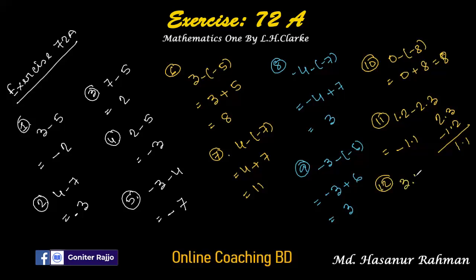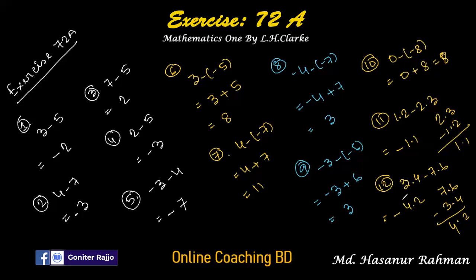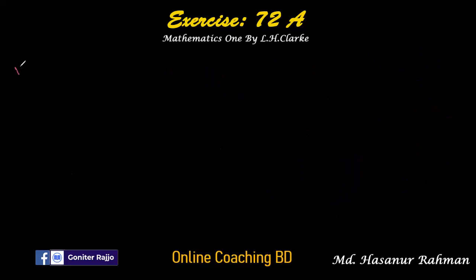Number twelve: 3.4 minus 7.6. Subtract 3.4 from 7.6: 6 minus 4 is 2, 7 minus 3 is 4, so the result is 4.2. The sign of the larger number is negative, so the answer is minus 4.2.